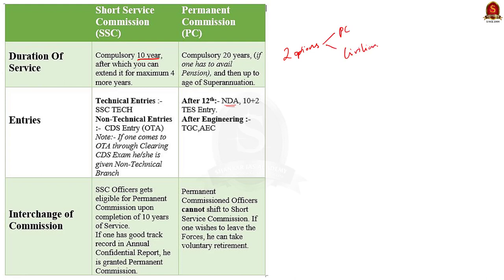The army allows conversion of short service commission officers to permanent commission only based on their annual confidential reports and other achievements. There is an indirect obligation on the officer to prove their worth during the first 10 years. If not selected for permanent commission, they still have the option for a four-year extension, and they can resign at any time during this period.